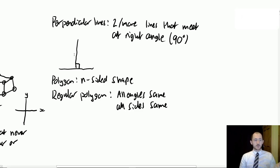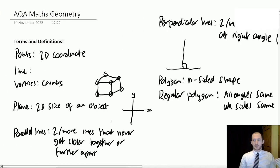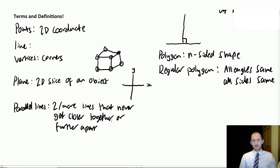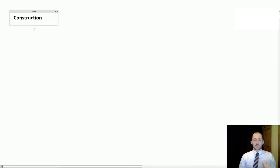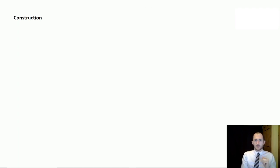You should also be able to draw a diagram from a written description. Basically, if they say we have a triangle with sides 3, 4 and 5 centimetres, you should be able to draw that diagram. It doesn't have to be accurate or anything — it just needs to be drawn.